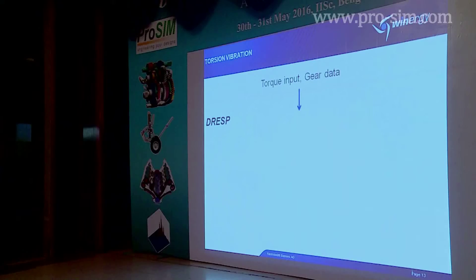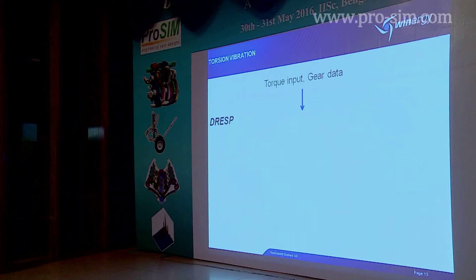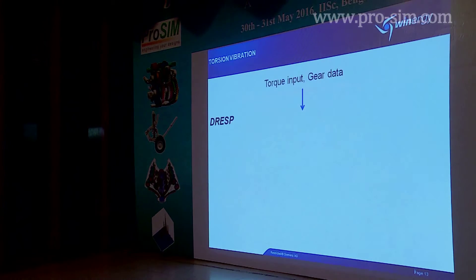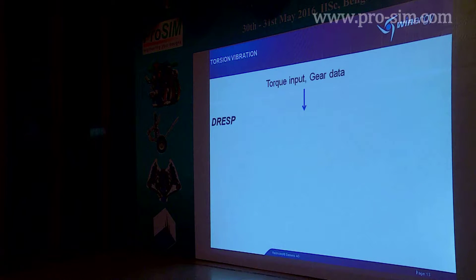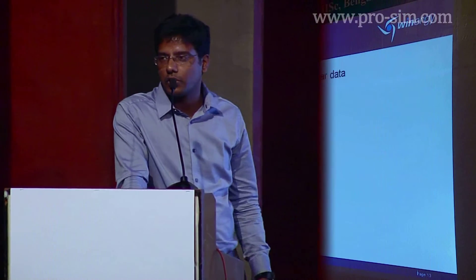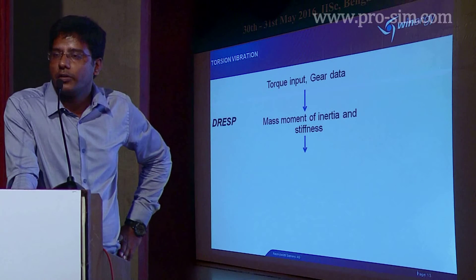Now I would like to give an overview of how torsional vibration analysis is specifically done for gearboxes. We use a simple tool called DRESS, where we try to get the torsional vibration in only one dimension. We have input data such as torque as well as gearbox gear data, which comes from our ST-plus data, and based on this we put it as input to our DRESS model.